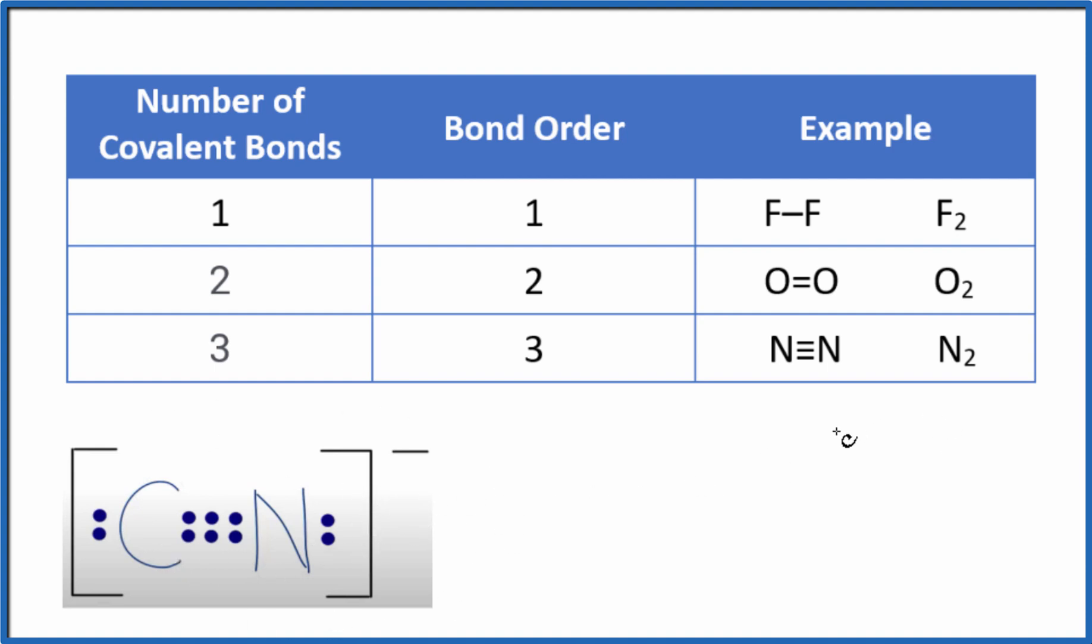So when we look at bond order, we're going to look at these electrons here shared covalently between the carbon and the nitrogen.